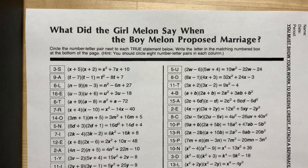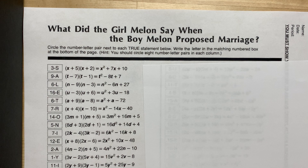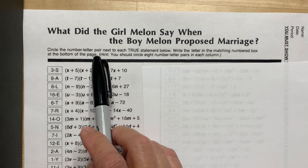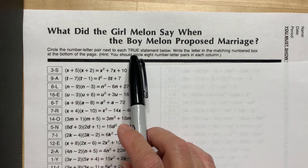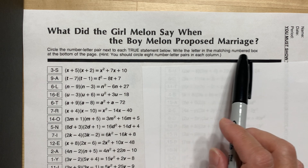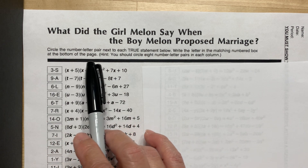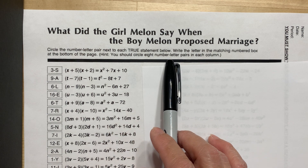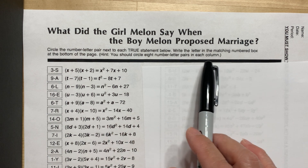What did the girl Melon say when the boy Melon proposed marriage? Here, what you need to do is verify if it is true. It says: circle the number-letter pair next to its true statement below. Write the letter in the matching number box at the bottom of the page. Hint: you should circle eight number-letter pairs in each column.